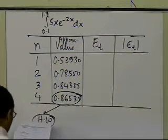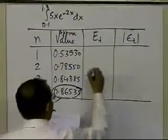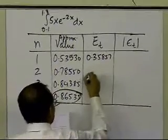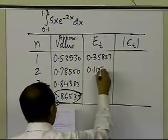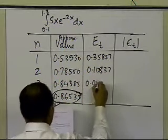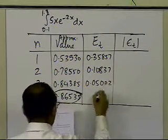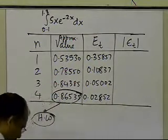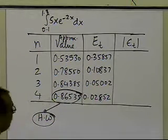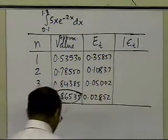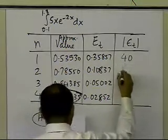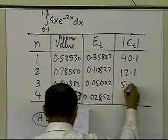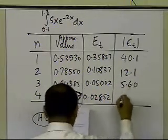Now, if you're going to look at the true errors which you got in each case, here we got 0.35857, here we got 0.10837, here we got 0.05002, and here we got 0.02852. If you just look at those numbers, let me write down, fill this last column also. This is about 40.1%, this is 12.1%, this is 5.60%, and this is 3.19%.